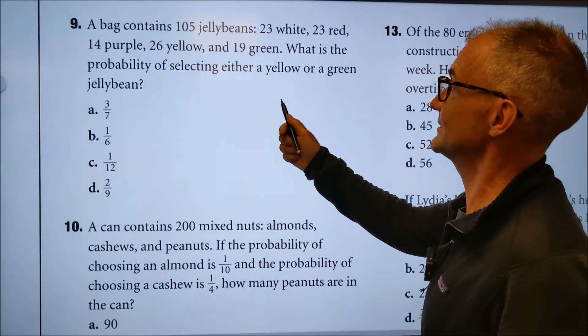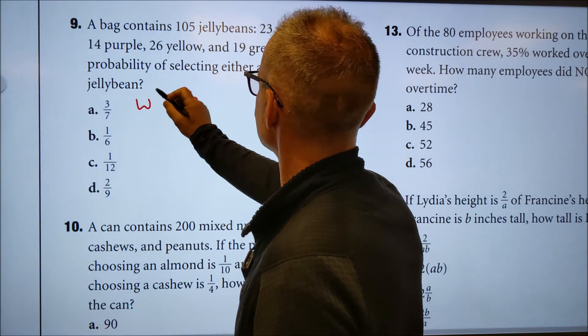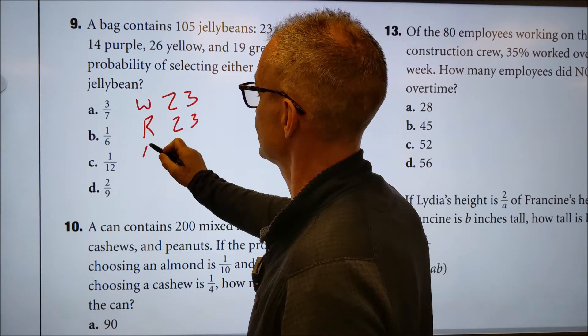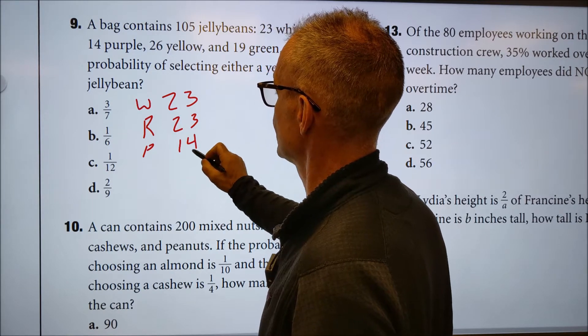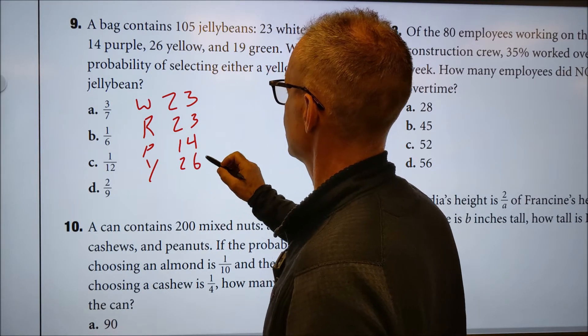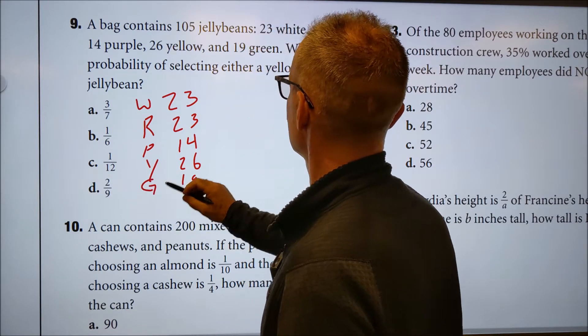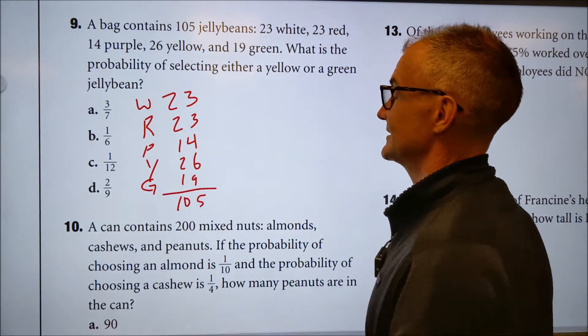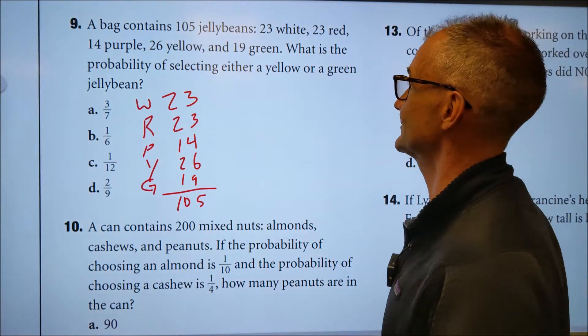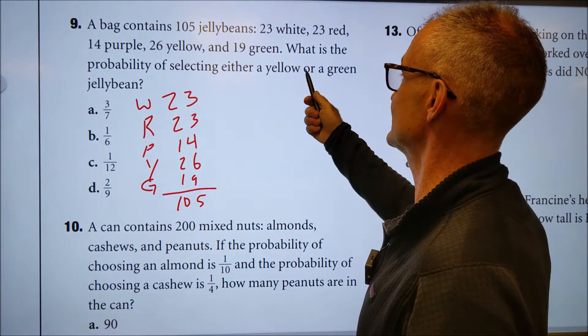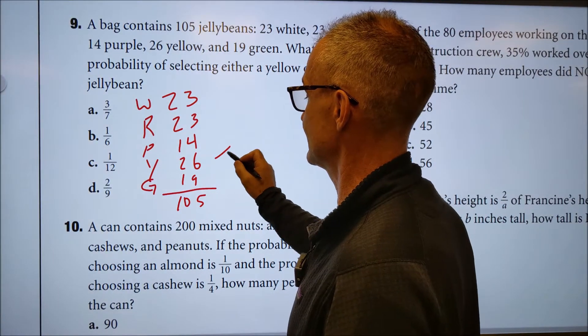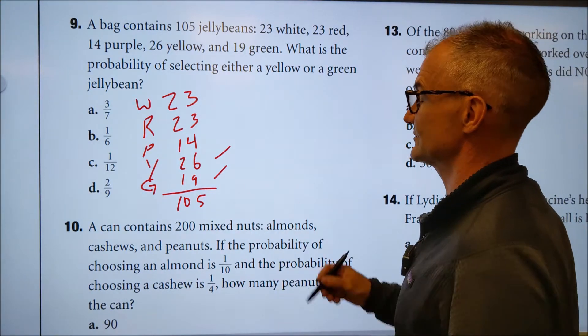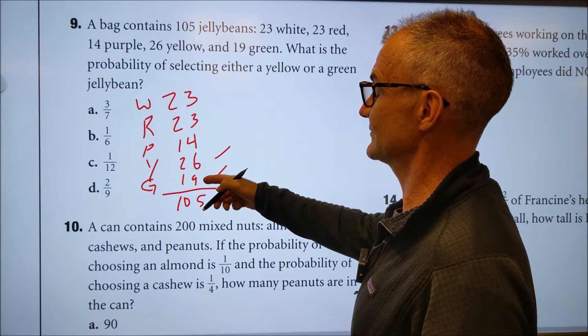So a bag contains 105 jelly beans: 23 are white, 23 are red, 14 are purple, 26 yellow, and 19 green. So that's pretty much the whole problem. They all add up, they say to 105. If I had time, I would double check that, but I really don't want to spend too much time on any one problem. What is the probability of selecting either a yellow or green jelly bean? So it's either a yellow or green. Remember the probability is the event of what it is over the total. So it's either yellow or green. I'm going to add those together.